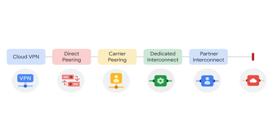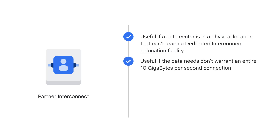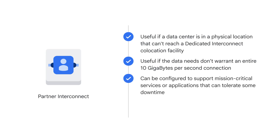Another option is Partner Interconnect, which provides connectivity between an on-premises network and a VPC network through a supported service provider. This is a good option if a data center is in a physical location that can't reach a dedicated interconnect co-location facility, or if an entire 10GB per second connection isn't needed. Depending on available needs, Partner Interconnect can be configured to support mission-critical services or applications that can tolerate some downtime.